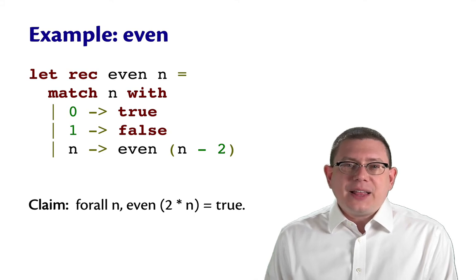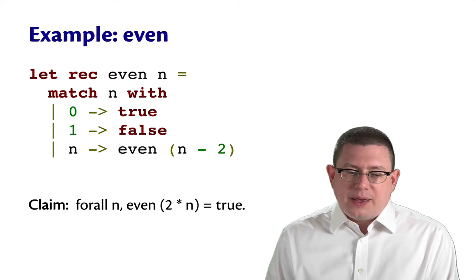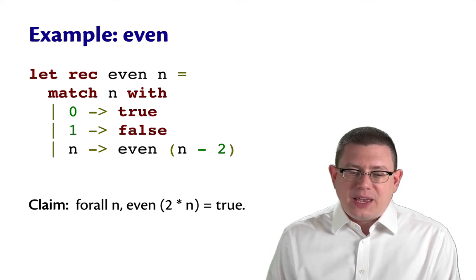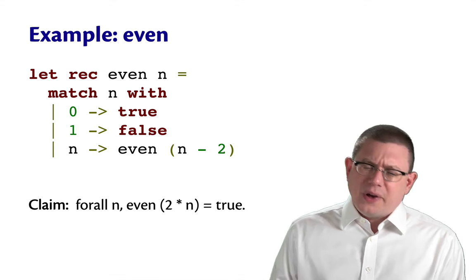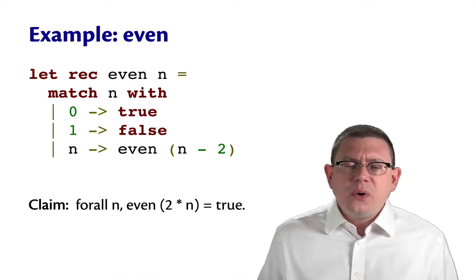Well, we can't exactly do it with the equational reasoning we've seen so far. You know, we can do a case analysis and say, well, if n is 0, then it returns true. If n is 1, it returns false. But what about the arbitrary case where we don't know what n is?